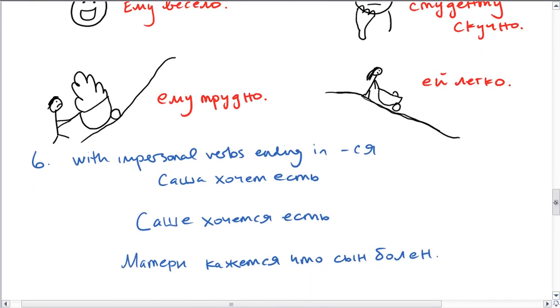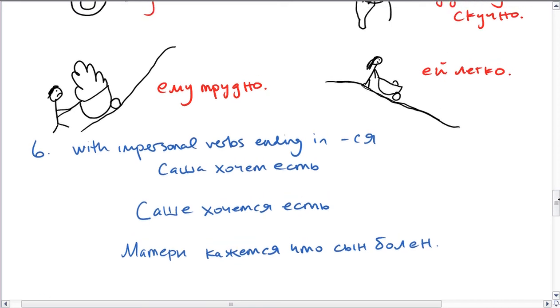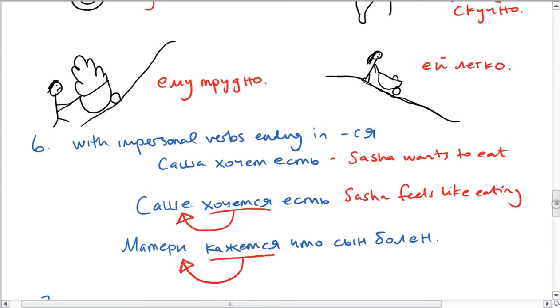So we also use the dative case with impersonal verbs ending in -ся. So with this one, Саша хочет есть means Sasha wants to eat. But if we use хочется instead of хотеть, now it's this impersonal verb, and it means to Sasha. So the meaning changes somewhat, and now it means that Sasha feels like eating. Or somebody feels like eating, sleeping. It's a little softer. Also, кажется - this is very common. So the person to whom something seems whatever is put into the dative case. Матери кажется, что сын болен. So to the mother, it seems like her son is sick.